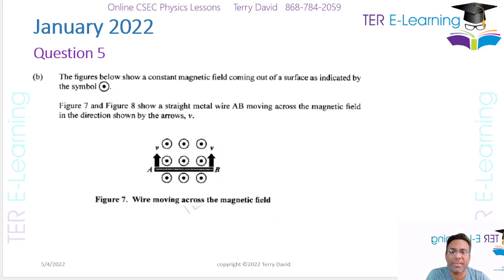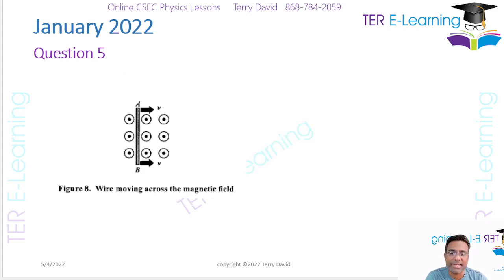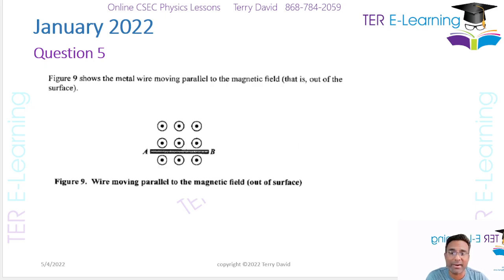In part b, the figure shows a constant magnetic field coming out of the surface. Figures seven and eight show a straight metal wire — conductor AB — moving across the magnetic field. In figure nine, the metal wire is moving parallel to the magnetic field. This question is about electromagnetic induction: when a conductor cuts a magnetic field, an EMF is induced across the ends of the conductor. We have three different scenarios.